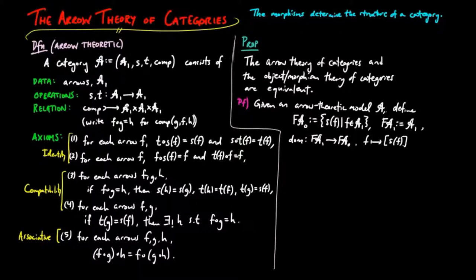And we use the brackets to distinguish this from the arrow associated to the source of f. And we also define the codomain to take the morphism f to the object, the source of the target of f.